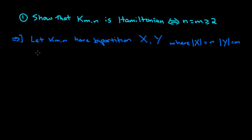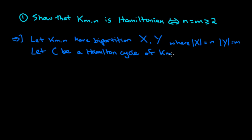We know that there is a Hamilton cycle in this graph and we want to show that N equals M. Let C be a Hamilton cycle of K(M,N). We should notice that each cycle in a bipartite graph has only cycles of even length, none of odd length. We have done this in previous videos, so we know that each cycle in this graph has even length.